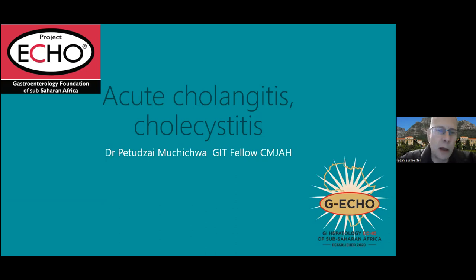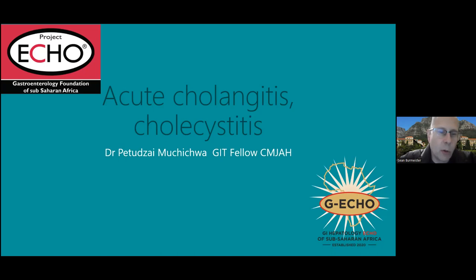Cholecystostomy is a salvage procedure for patients too sick for theater. Once the patient improves, a cholecystogram (contrast injected down the catheter) is used to check whether the cystic duct is patent. If patent, the catheter can be blocked; if the patient remains well, the cholecystostomy can be removed and the patient evaluated for cholecystectomy. If the cystic duct remains blocked, the tube must stay on free drainage and a decision made on the appropriate way forward.